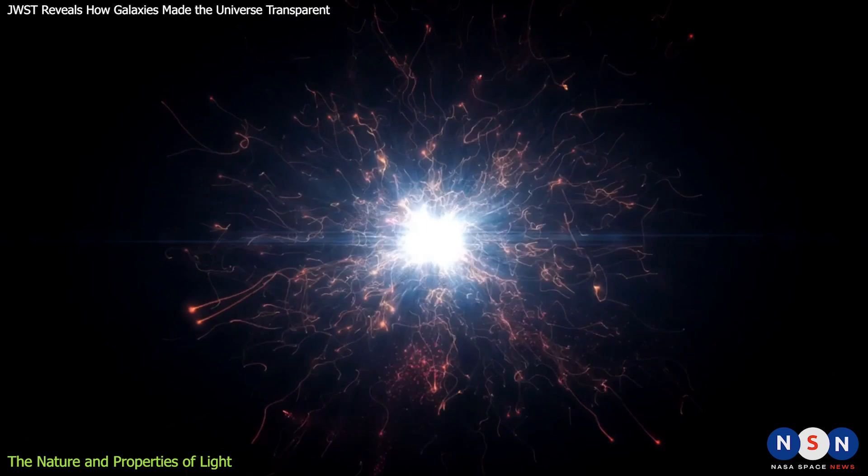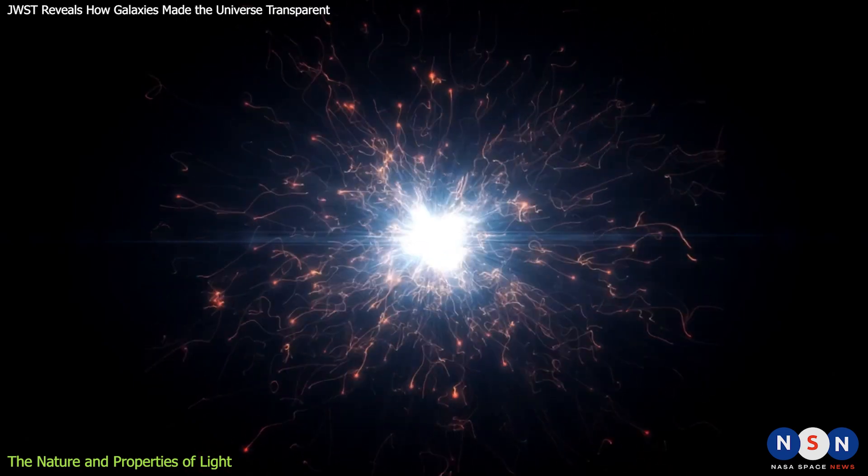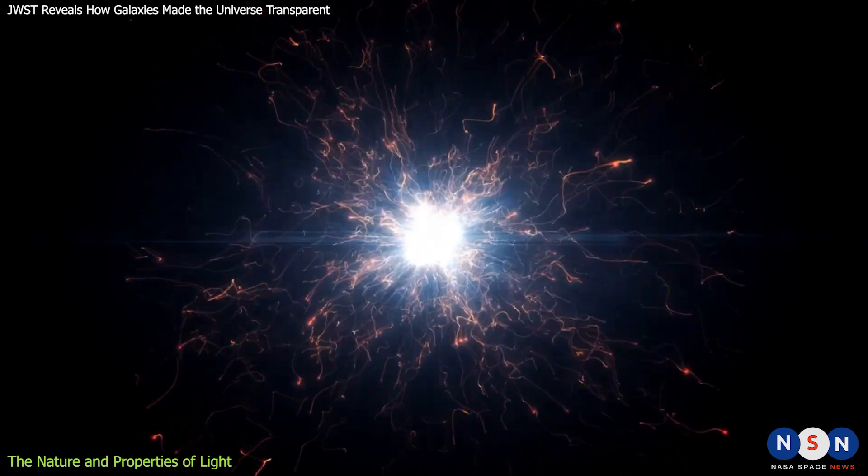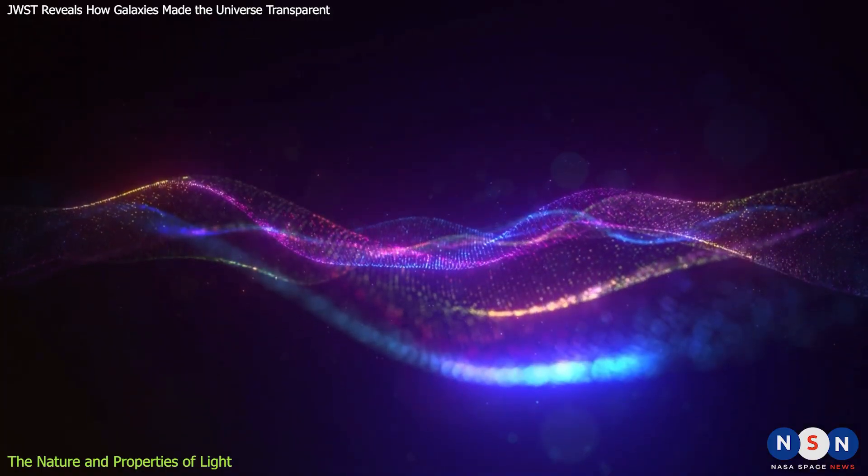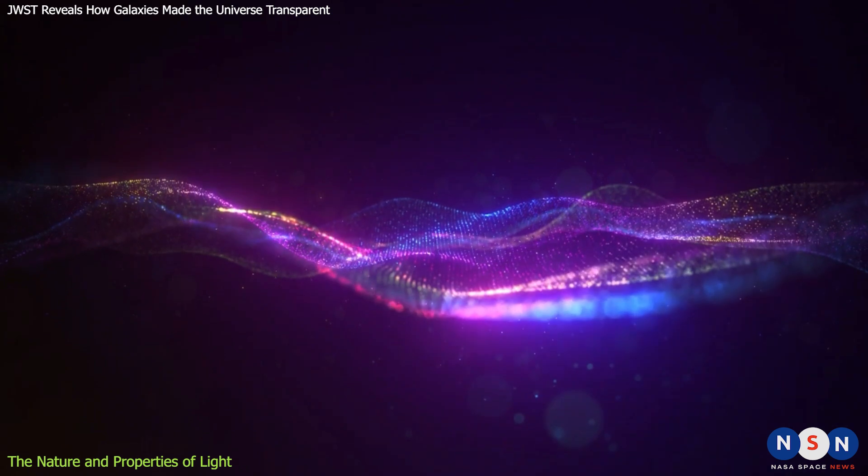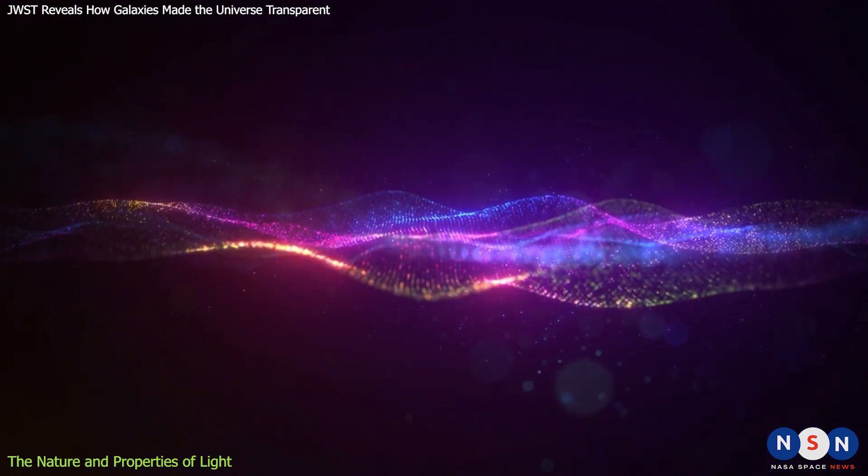These three concepts—wavelength, frequency, and intensity—help us describe and classify different types of light. However, they are not enough to explain how light interacts with matter. For that, we need another concept: ionization.